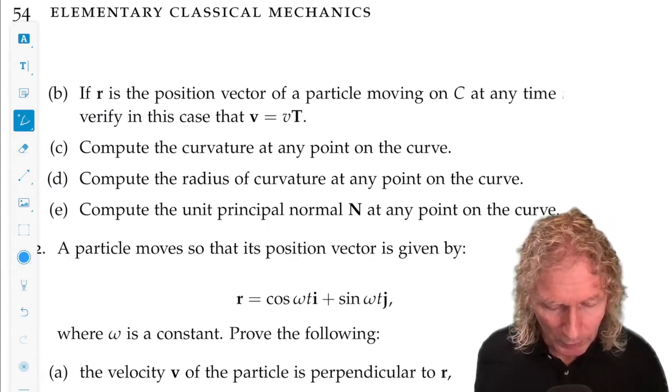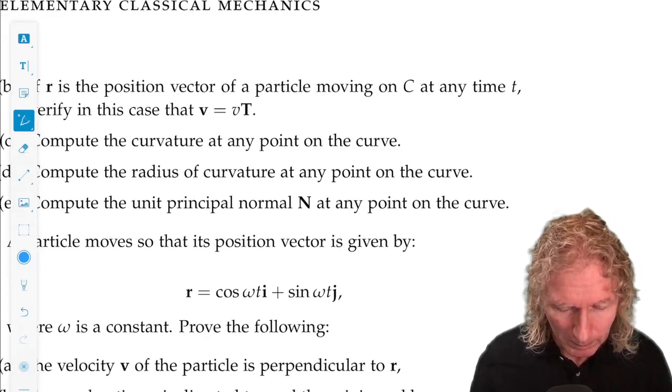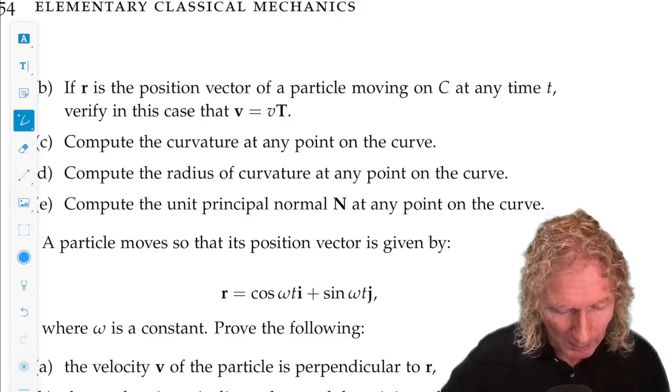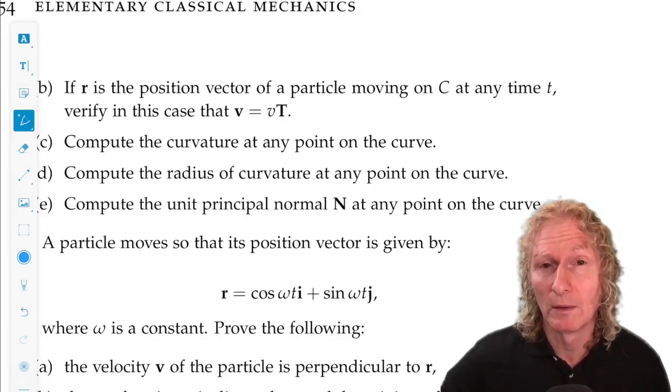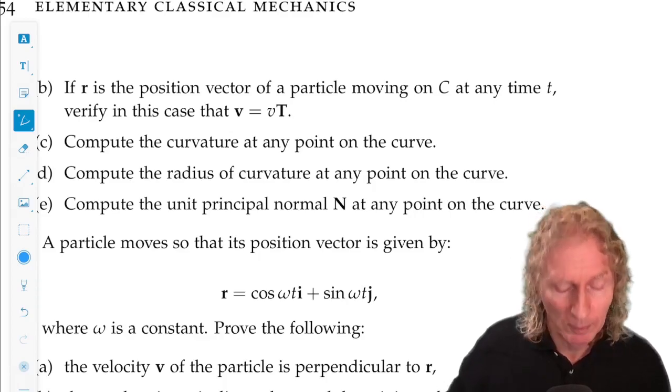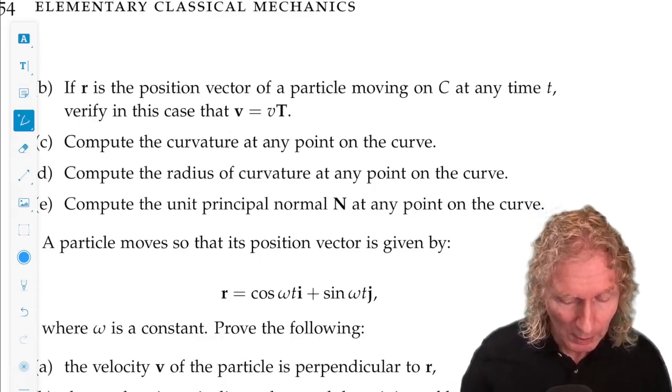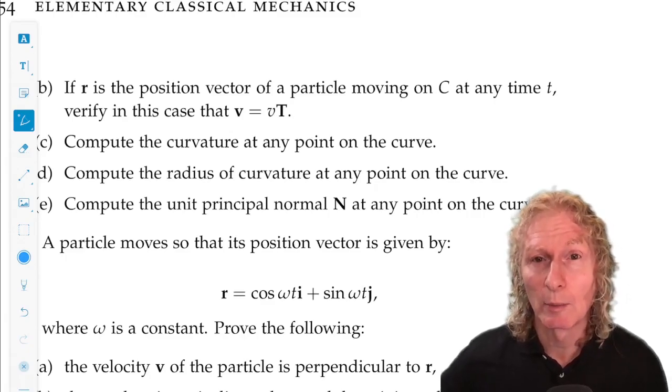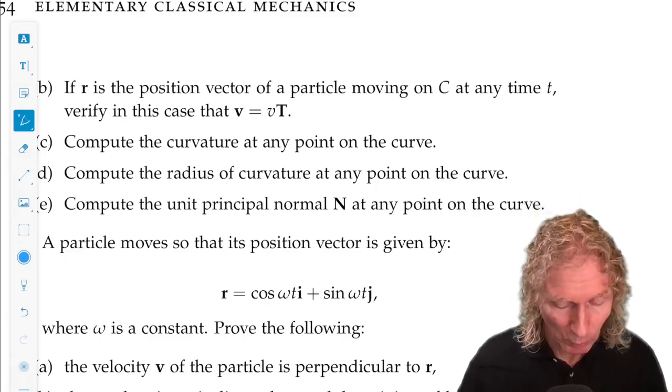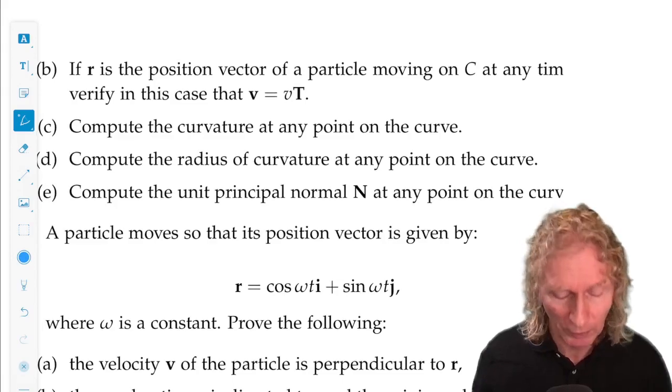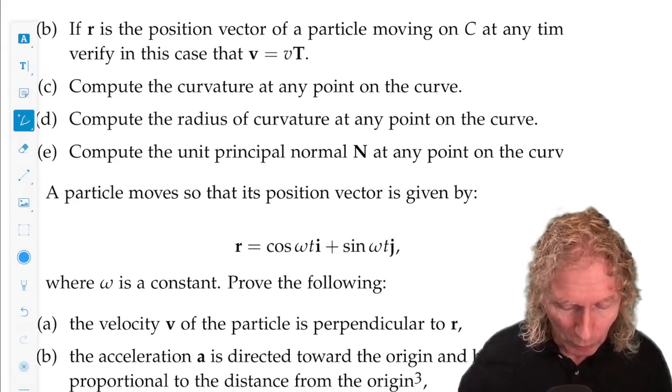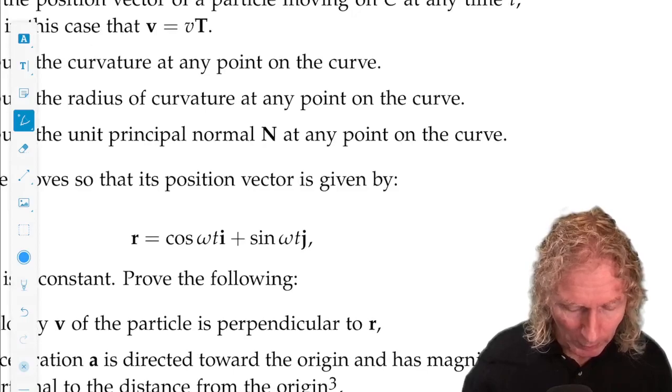If R is a position vector of the particle moving on C at any time, verify that the velocity is magnitude of velocity times T. Compute the curvature at any point on the curve. Compute the radius of curvature. It's just the reciprocal. Compute the unit principle normal at any point on the curve.